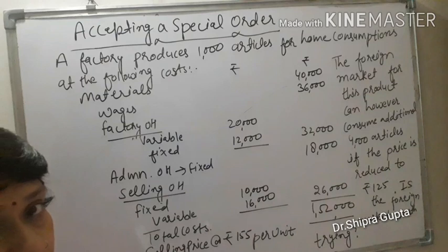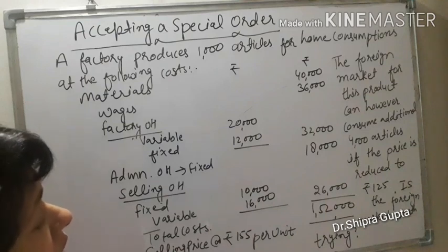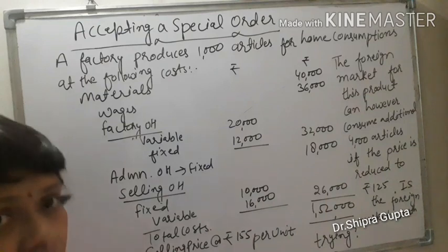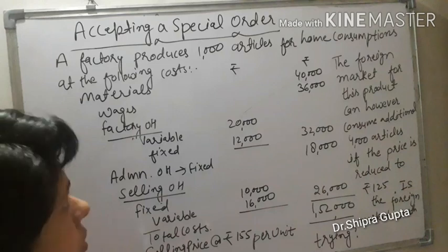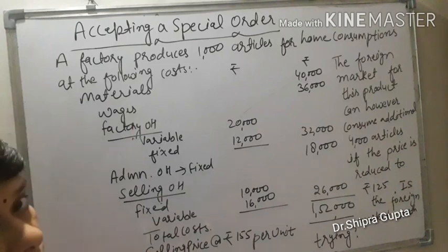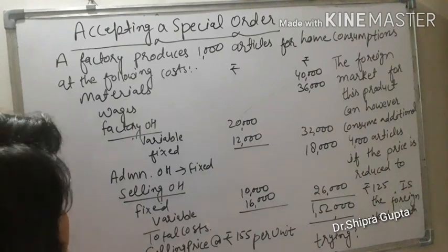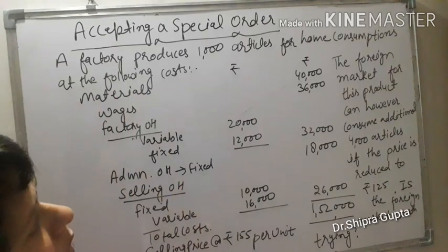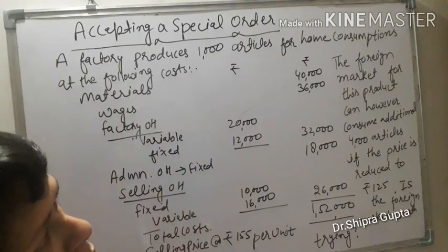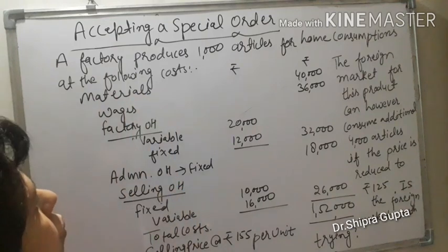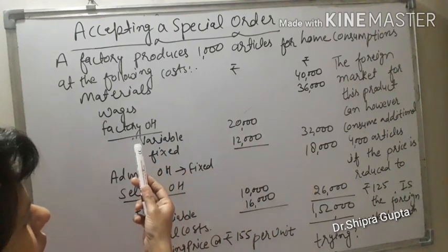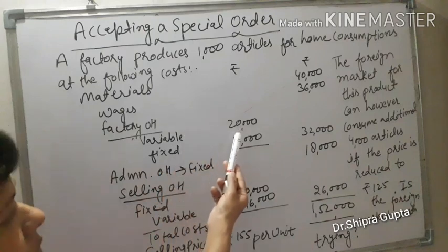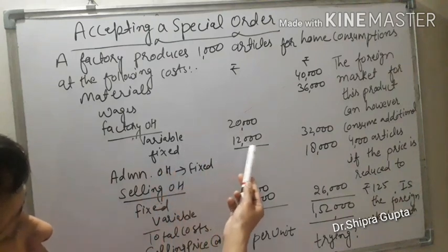In this application we will consider whether we can accept any additional order. We will ignore fixed cost for the special order because it is an additional cost — the original fixed cost is already covered. The question: a factory produces 1000 articles for home consumption at the following cost — materials ₹40,000, labour ₹36,000, factory overhead variable ₹20,000 and fixed ₹12,000.